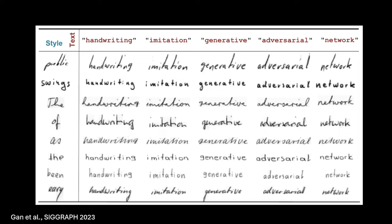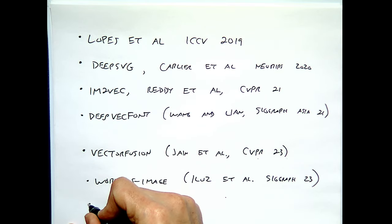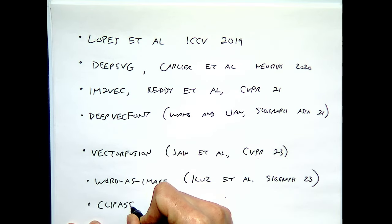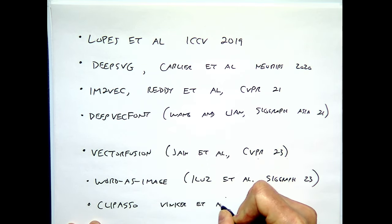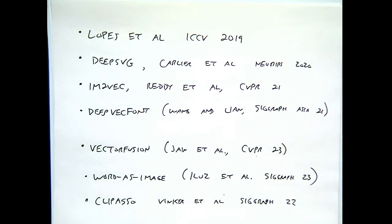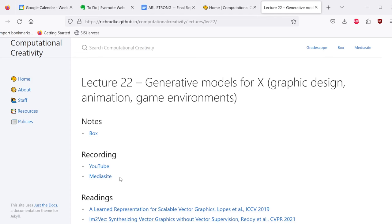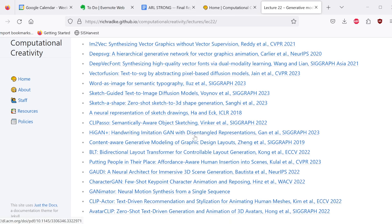That covers the vector graphics and sketches area. Notable papers include Lopez et al. ICCV 2019, Clipasso by Vinker et al., and many more linked on the course website. I've listed all the papers we went through, and anything you want to learn about from today is probably there.